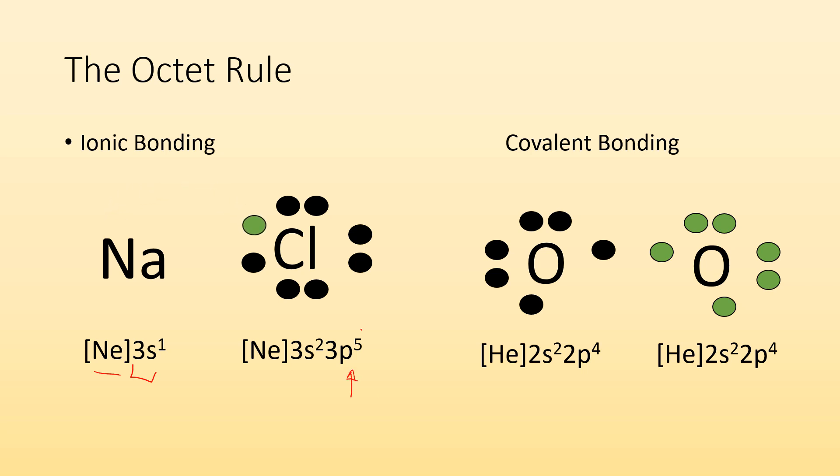Sodium is going to lose its electron to chlorine. And now sodium has the same electron configuration as neon and chlorine has the same configuration as argon, the next noble gas.